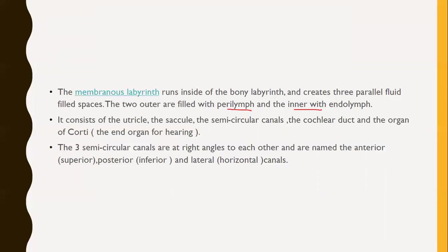The membranous labyrinth consists of the utricle, the saccule, the semicircular canals, the cochlear duct, and the organ of Corti. The organ of Corti is considered the end organ for hearing. That is why the internal ear is considered the most important part of the ear, as it has the function of hearing.